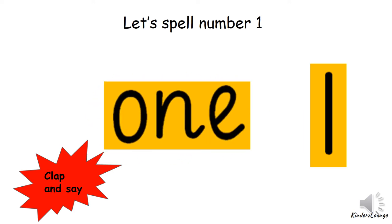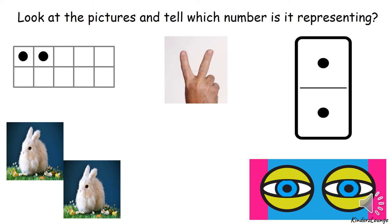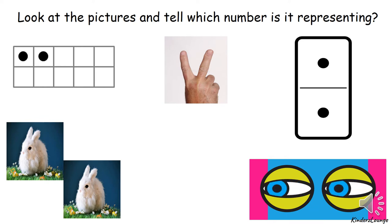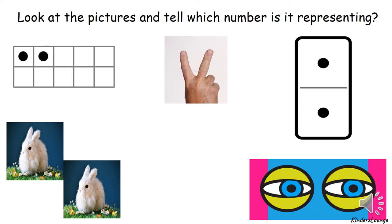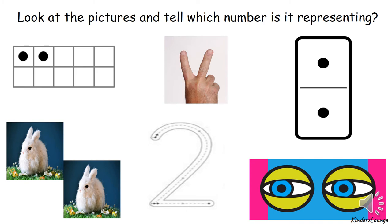Now look at this picture and tell which number it is representing. I can see two counters in a ten frame, two fingers, two dots on a domino, two rabbits sitting on grass, and two eyes rolling side to side. Which number is it representing? It's number two!